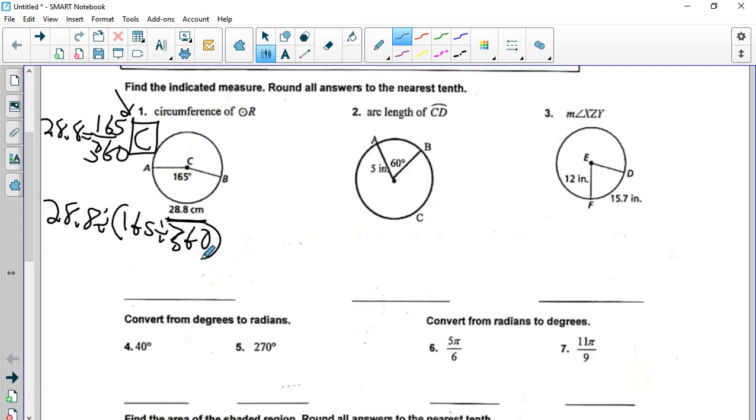Otherwise, what you have to do is do 165 divided by 360, get a long decimal, probably round it, and then divide by 28.8 by that decimal. But then you're rounding a rounded number. This is the way to get the most accurate answer. And when you do that, you get circumference equals 62.6 centimeters. 28.8 divided by the division of 165 over 360.